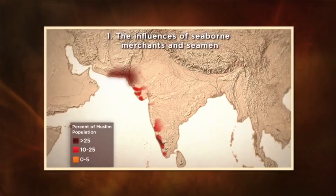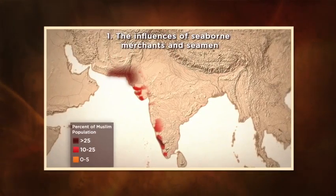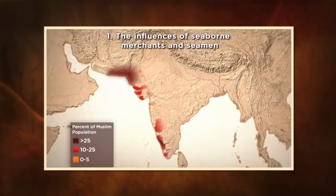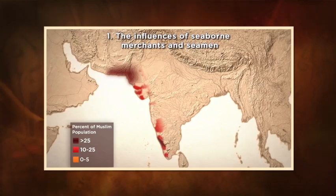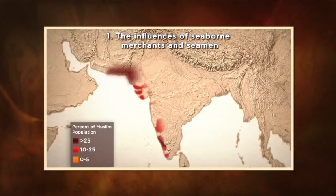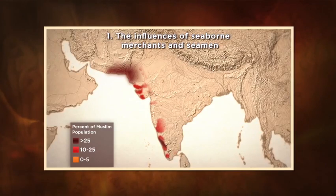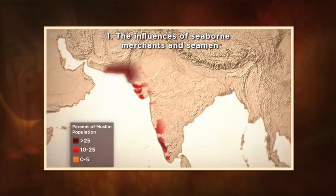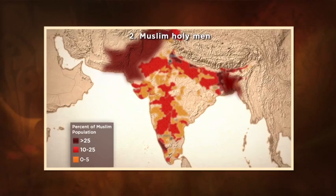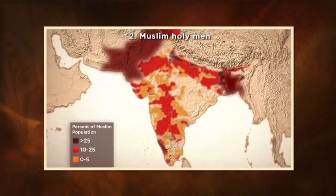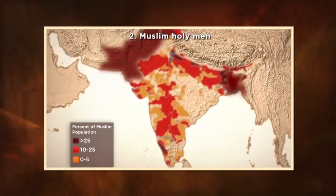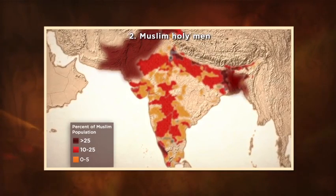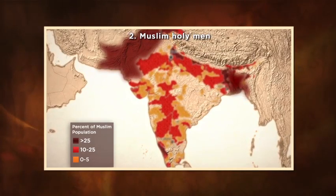First, we'll look at the way that some coastal communities in India developed into substantial Muslim populations through interactions with intercontinental merchants, seamen, and saints, particularly those from the Arabian Peninsula. Next, we'll look at how Muslim holy men inspired large numbers of Indians to convert to Islam, as part of a larger process of economic and social change, particularly in the northwestern and the eastern quarters of the subcontinent.